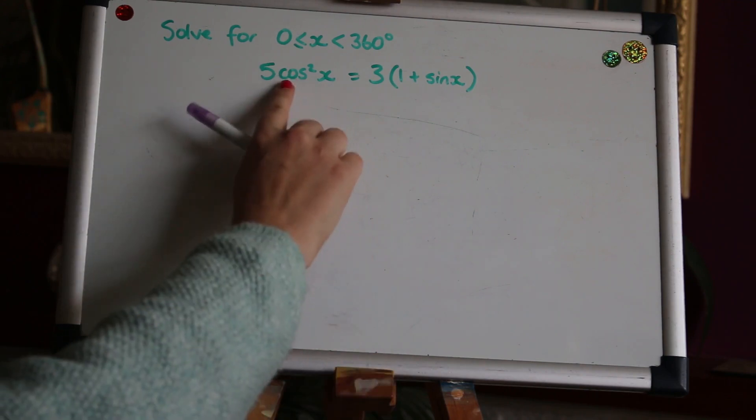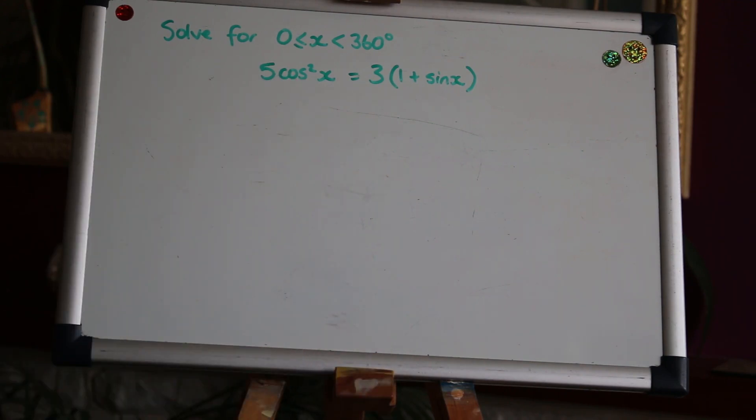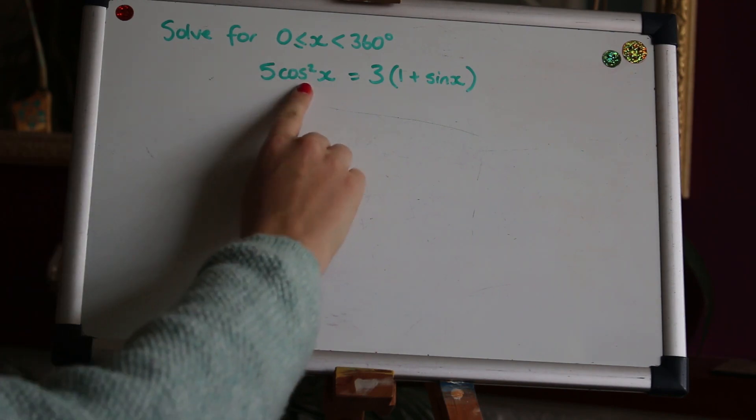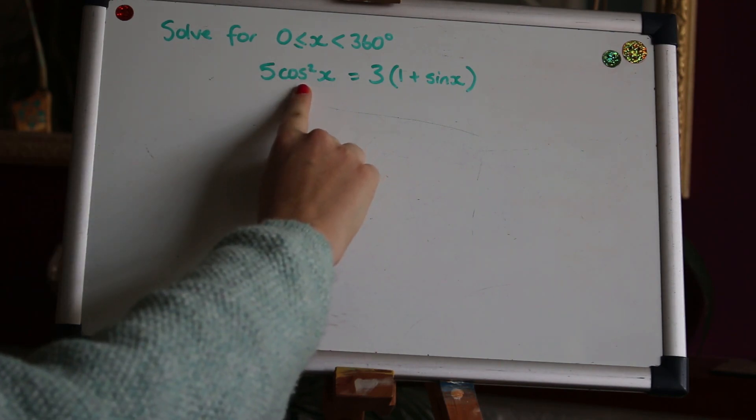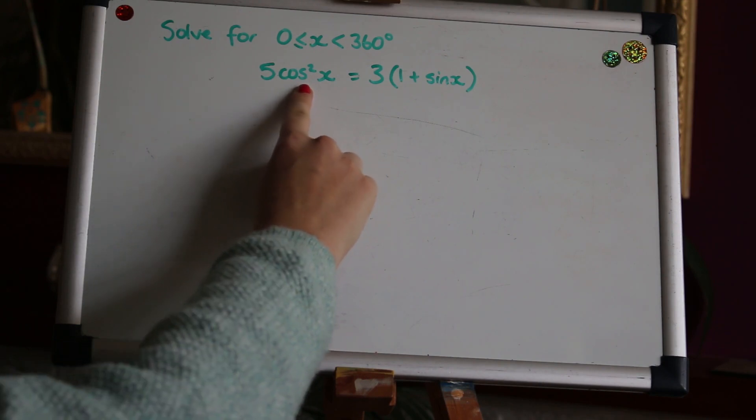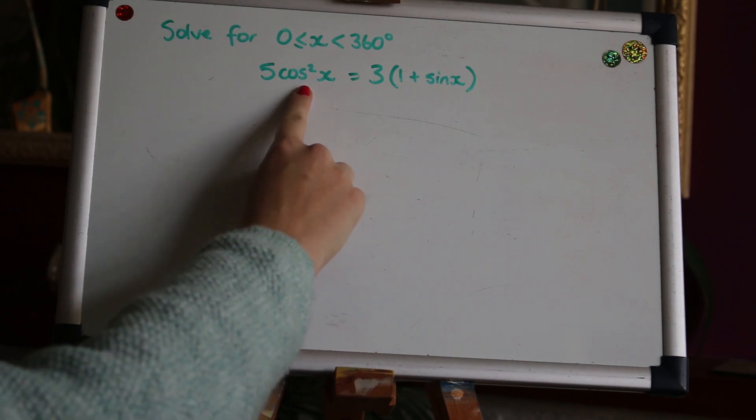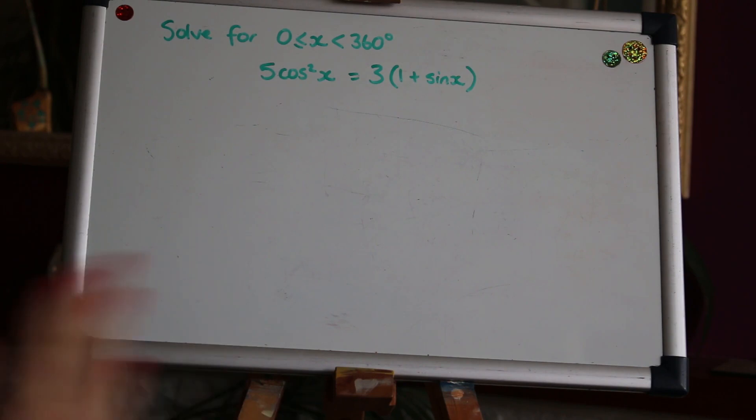This one's got a cos squared in it, so we're going to be using the first identity for this one. And the way to do that is by using the version of it where cos squared is the subject. So cos squared is one minus sine squared and we can substitute that directly in.